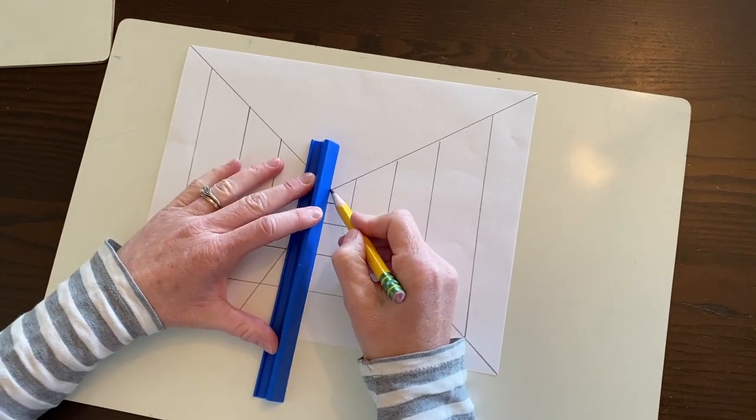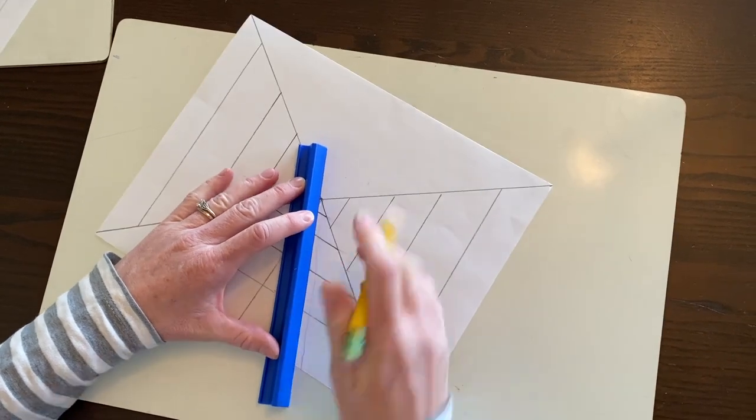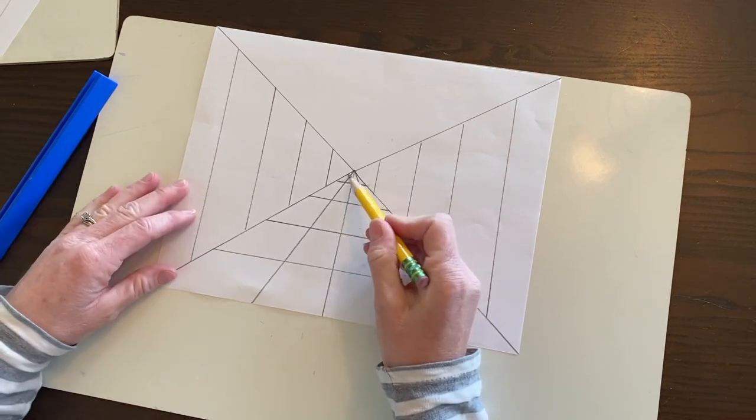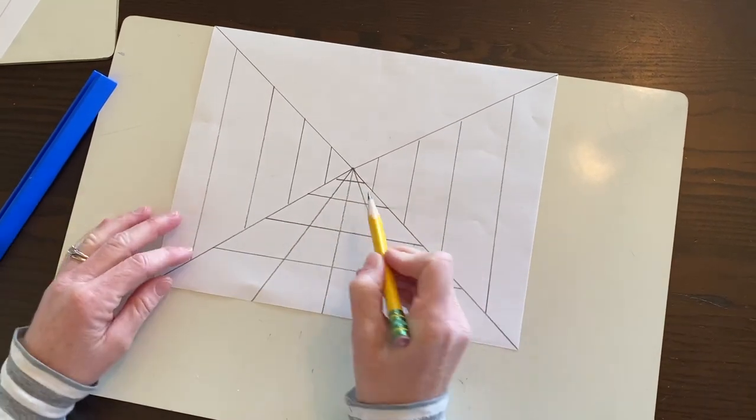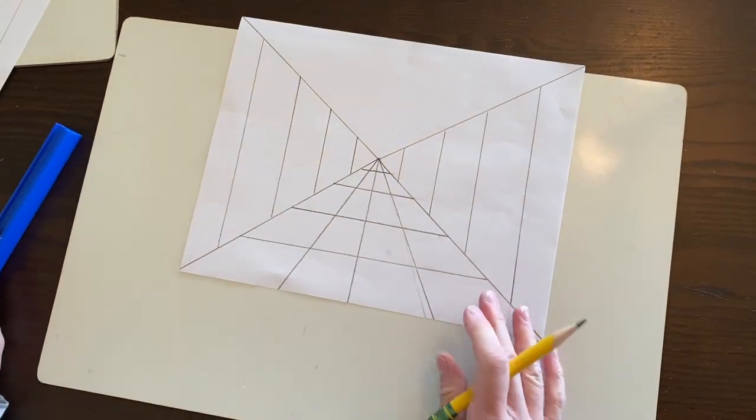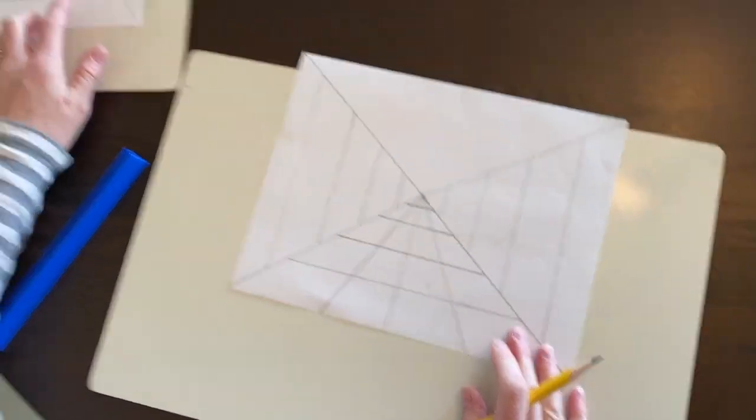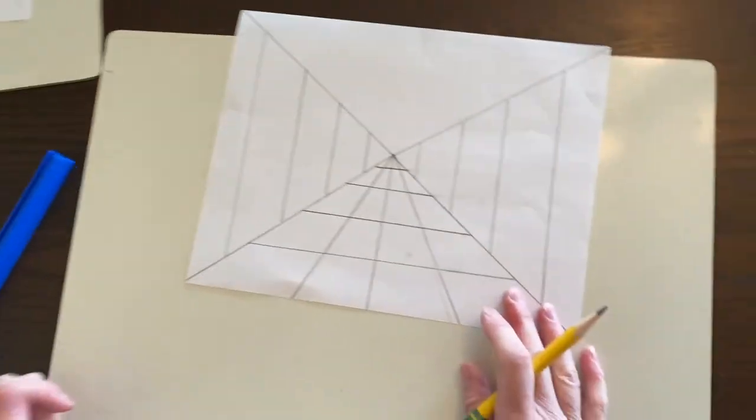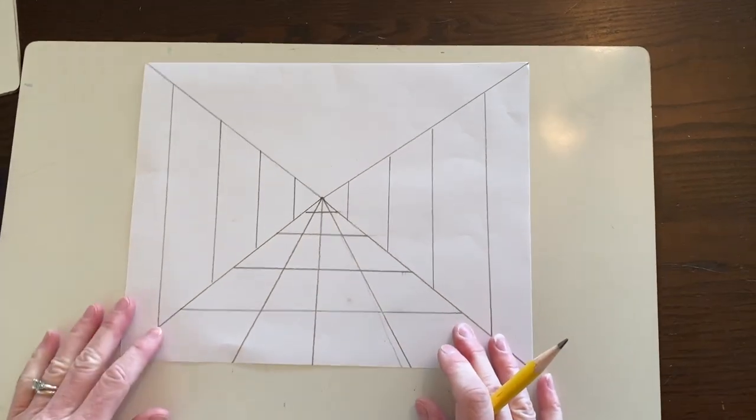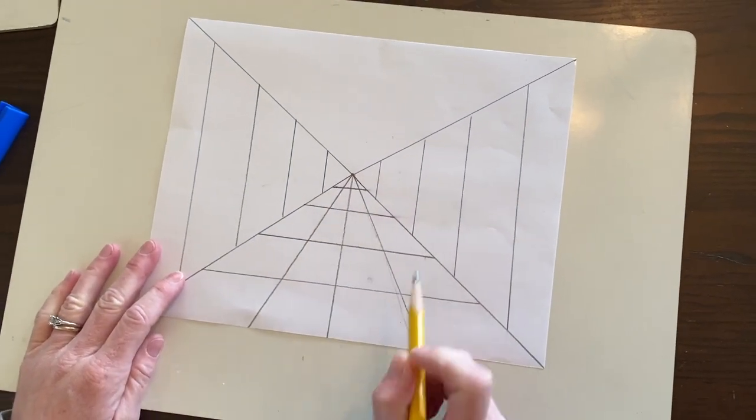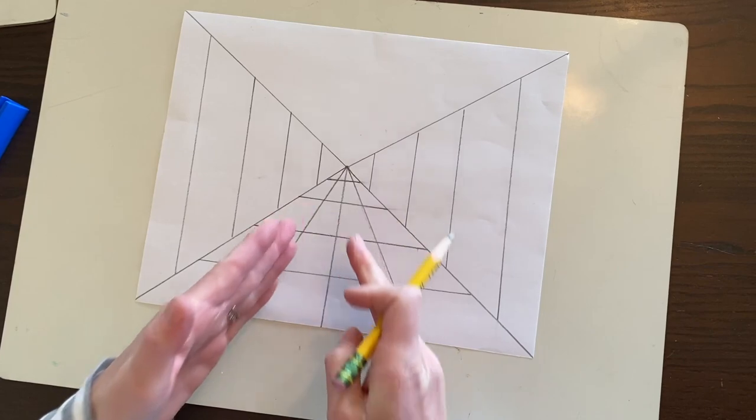Now mine's going to be kind of a larger checkerboard pattern. If you want yours to be smaller, you can do more lines. The more lines you do, just the more you'll end up having to color in. It's completely up to you. I'm just going to keep mine kind of large. Perfect, looking good, looking good. You could add one more here and one more here if you want it to be a little more even, but this is looking great.